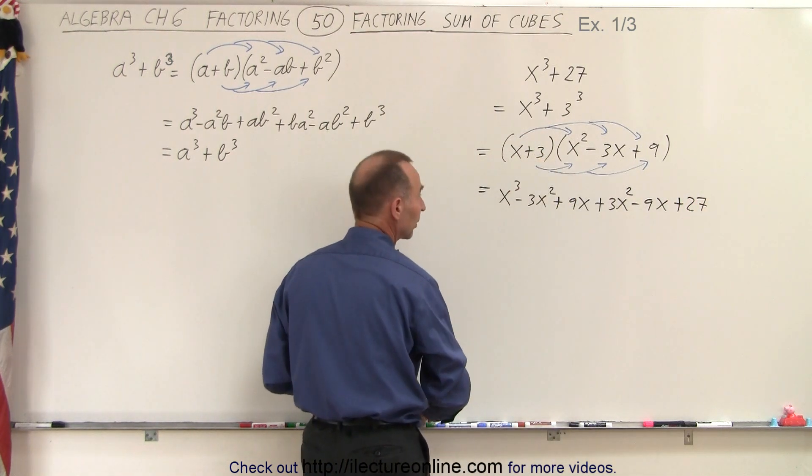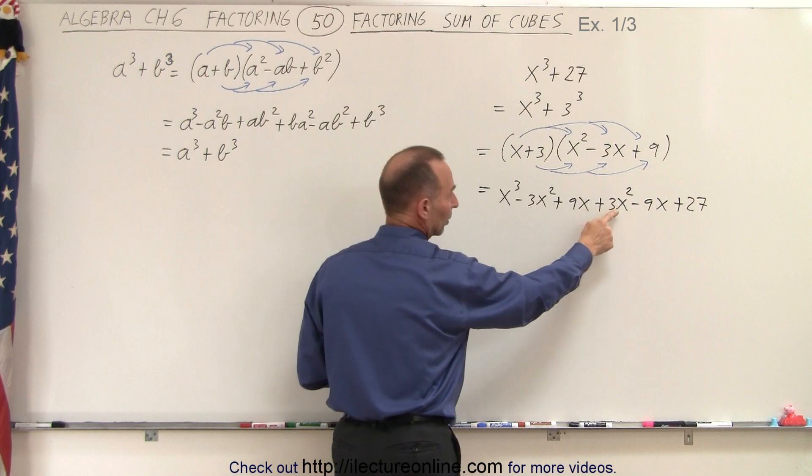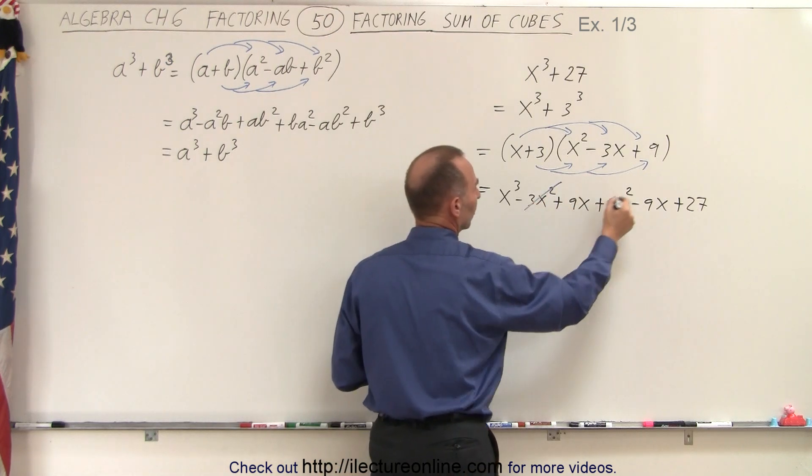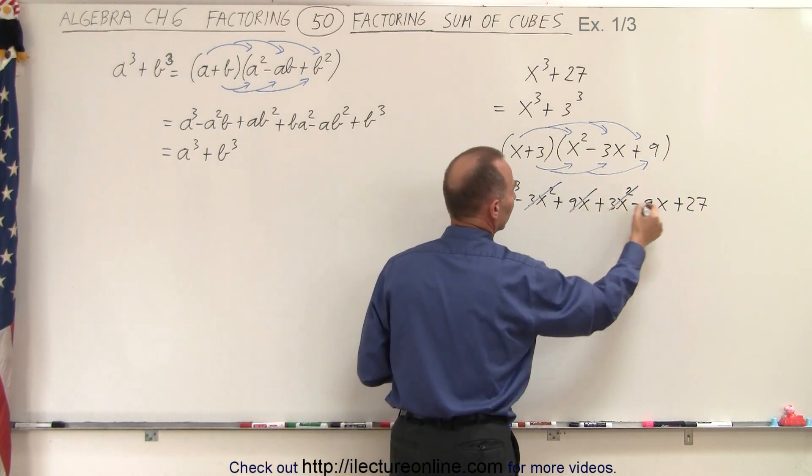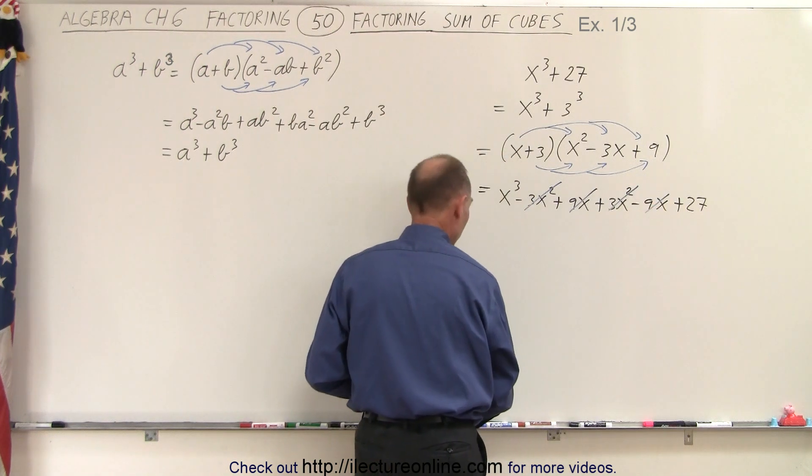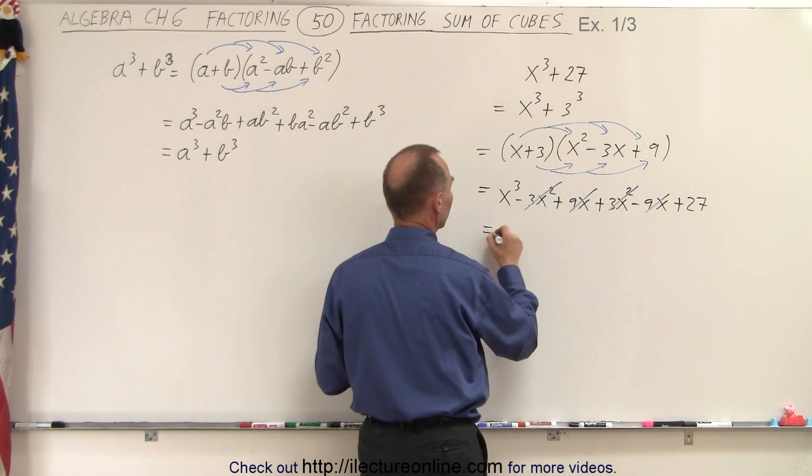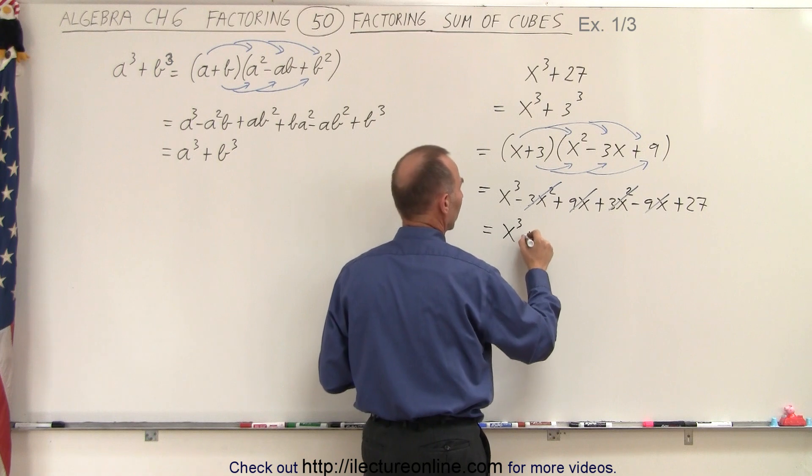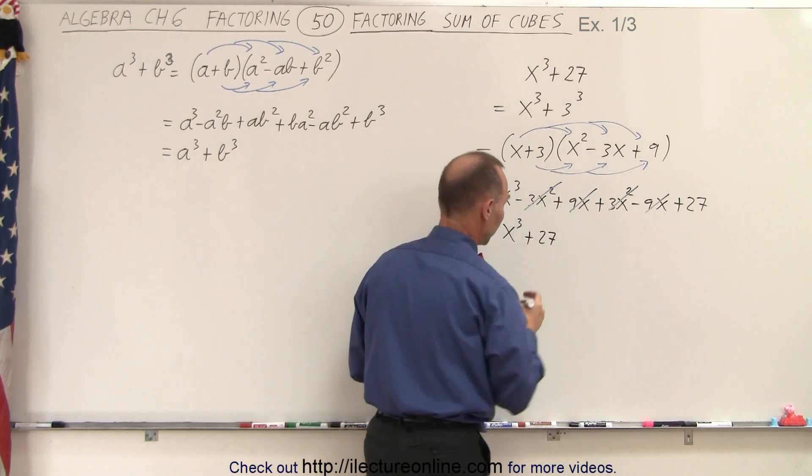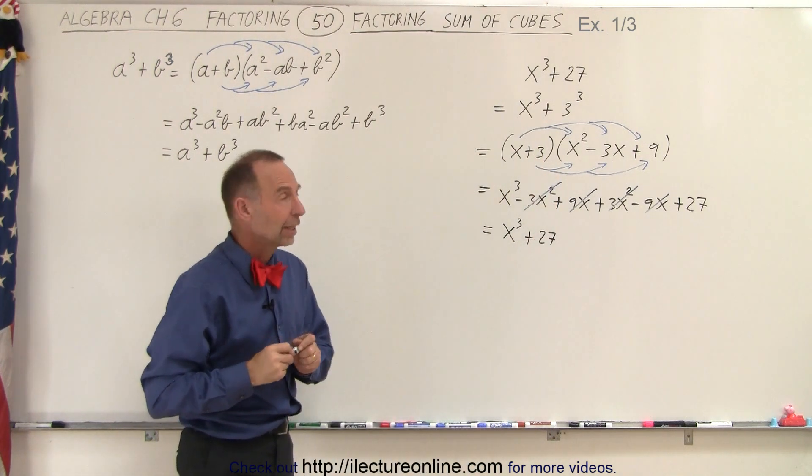Notice that if we look carefully, we have a minus 3x squared and a plus 3x squared, that cancels out. And we have a plus 9x and a minus 9x, that cancels out. And indeed, we get back the same thing, which is equal to x cubed plus 27, our original problem. So we know we did it correctly.